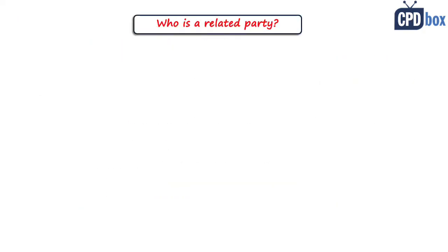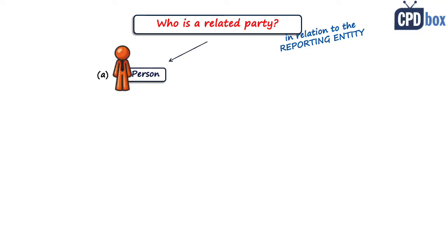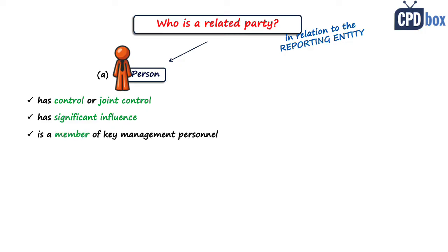So who is a related party? IAS 24 gives us a really extensive definition, but let's focus on basics. We speak about related parties with reference to the reporting entity — the one presenting the financial statements. There are two main categories. The first one is persons. A person is a related party if they have control or joint control of the reporting entity, significant influence over it, or are a member of key management personnel of the reporting entity or its parent.